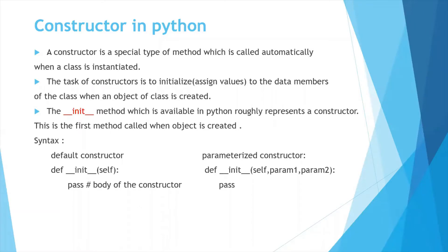Now let's see constructors in Python. If you are familiar with C++ or Java you don't need much explanation about constructors, but for people new to programming let me share a few details. A constructor is a special type of method which is called automatically when an object is created or when the class is instantiated. The task of a constructor is to initialize the data members with some values, and the constructor is the first method called when an object is created.